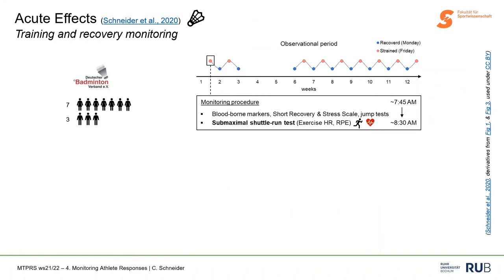I will give another example of how this could be done in training practice. We performed an observational study in elite badminton players — data from 10 subjects over more than 12 weeks during preparation for the World Championships. We tested athletes twice: in a recovered state on Mondays after the weekend — where there was relative relief — and strained after four or five consecutive training days on Fridays. We tested them always on Mondays and Fridays to see if we could detect acute responses to the typical training they perform. We again looked at different blood-borne measures.